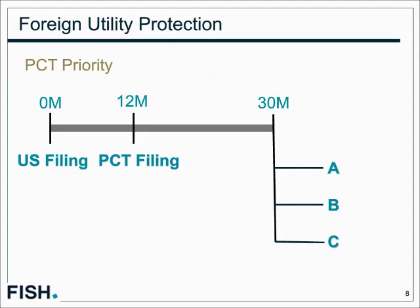Comparing this with PCT — under PCT, at the end of the process you file national stage applications and proceed separately in each country. Under the Hague, WIPO retains ultimate jurisdiction over the application; it does not transfer to individual countries. This is a harmonization of the formalities, but not a harmonization as to substance.